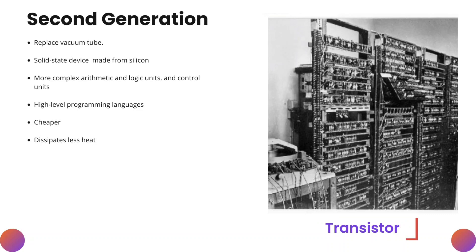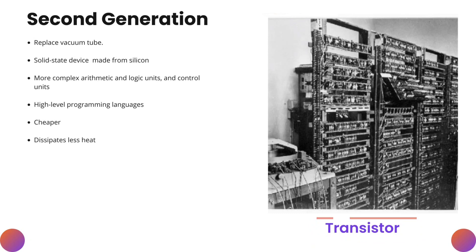Second generation. Transistor replaced Vacuum Tube. A transistor is a solid-state device made from silicon. Transistors can perform more complex arithmetic and logic unit operations, as well as control unit calculations. Transistors also supported high-level programming languages. Transistors are famous for being cheaper and producing less heat.